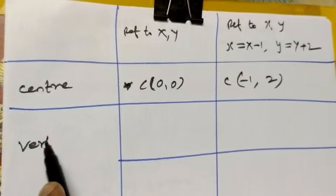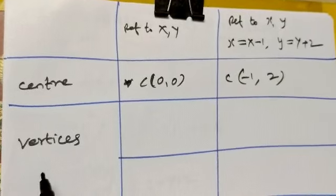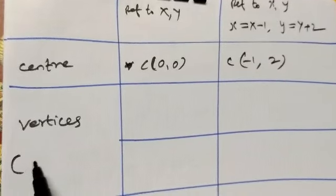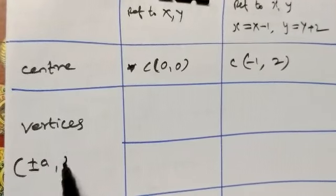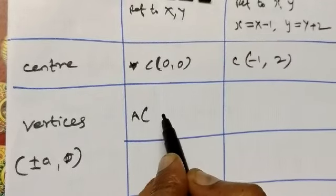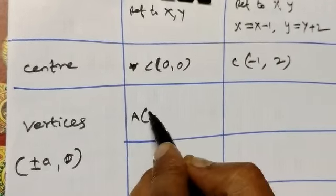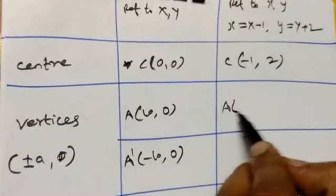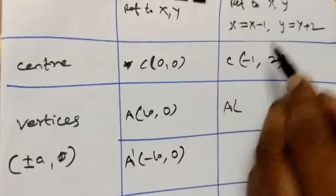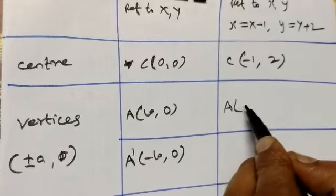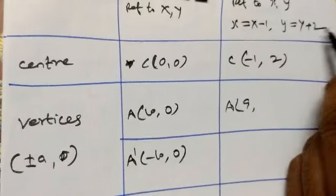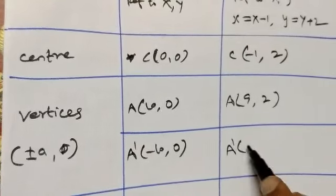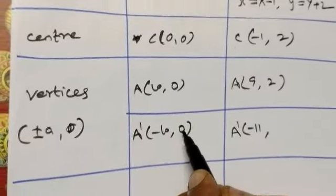Center C(0,0): when X=0, x=-1; when Y=0, y=2. So center is C(-1,2). Vertices A(±a,0) = (±10,0): when X=10, x=9, y=2; when X=-10, x=-11, y=2. So A(9,2) and A'(-11,2).